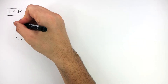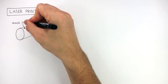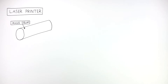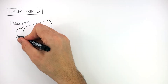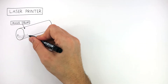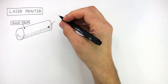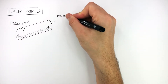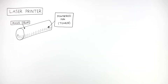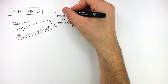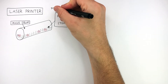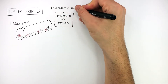A laser printer contains something called an image drum, and the image drum contains the powdered ink, also known as toner. To print something, the powdered ink is given a positive charge.